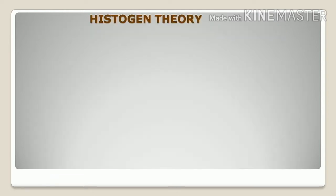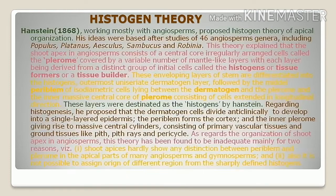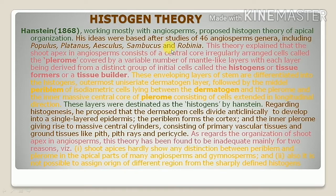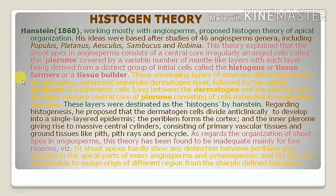The second theory is the histogen theory. Hanstein, working mostly with angiosperms, proposed this theory. His ideas were based on studies of 46 angiosperm genera, some of which are Populus, Platanus, Aesculus, Sambucus, and Robinia. This theory explained that the shoot apexes in angiosperms consist of a central core of irregularly arranged cells called plerome, covered by a variable number of mantle-like layers, with each part of the stem being derived from distinct groups of initials called histogens, or tissue formers.